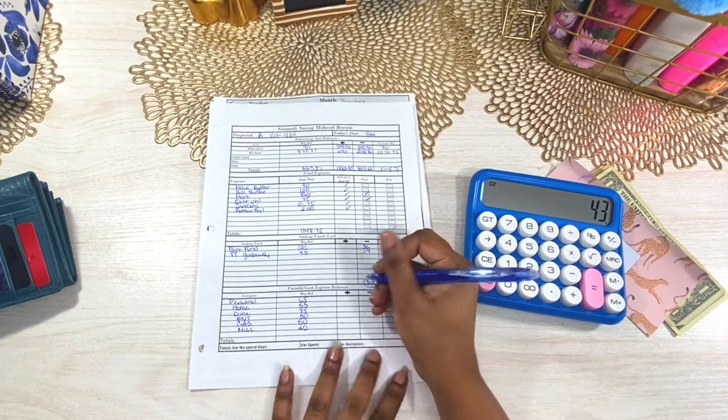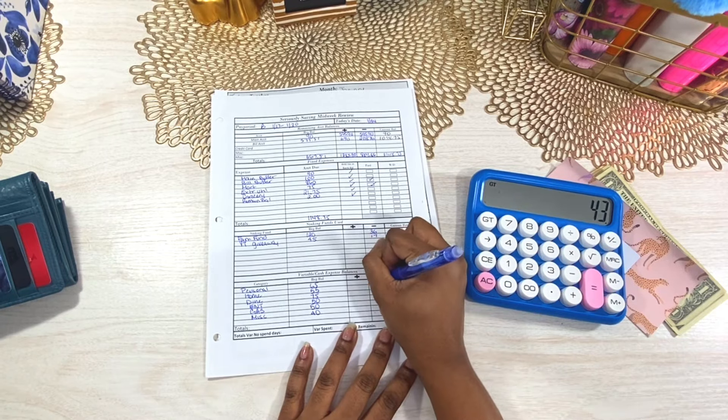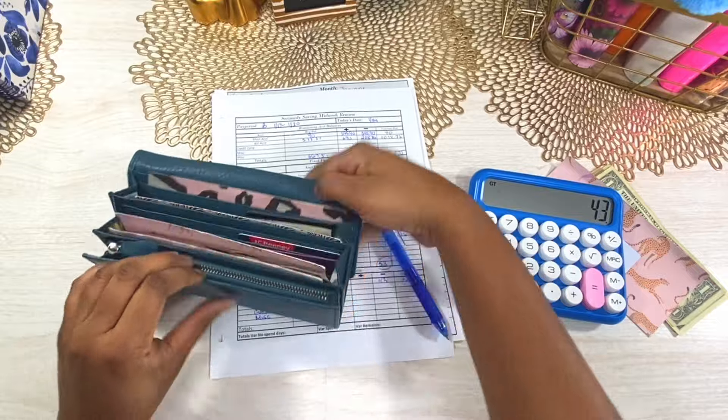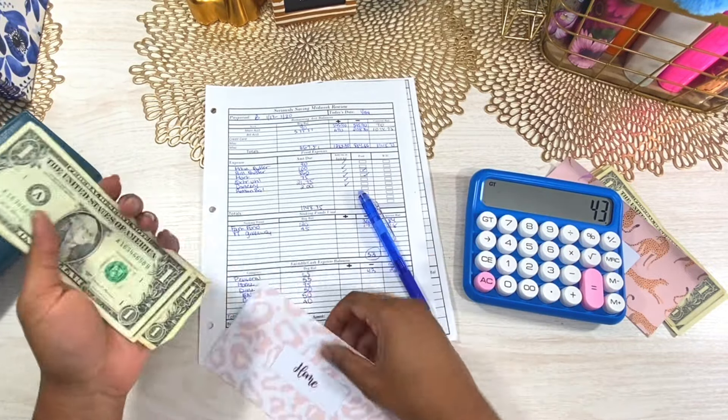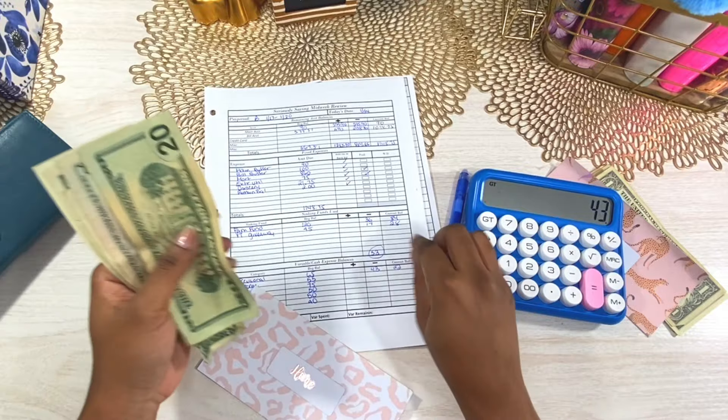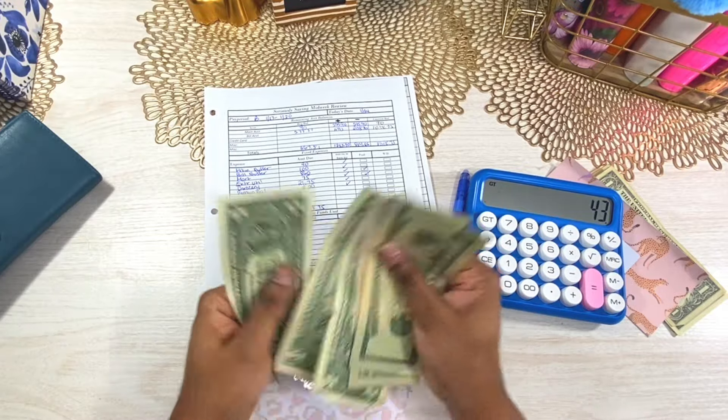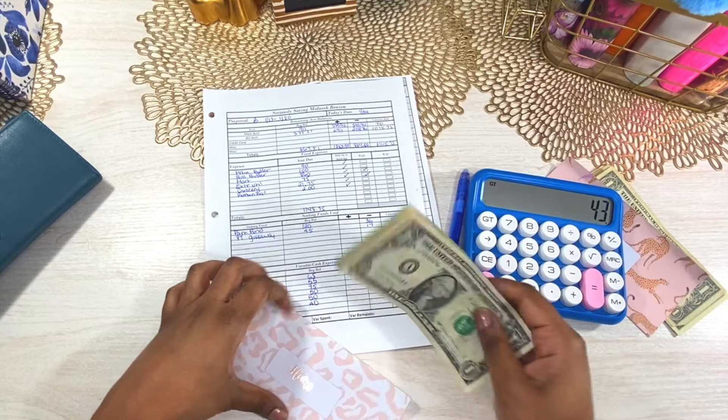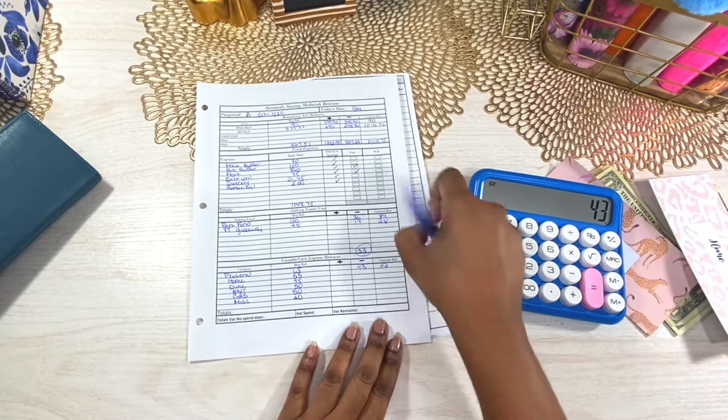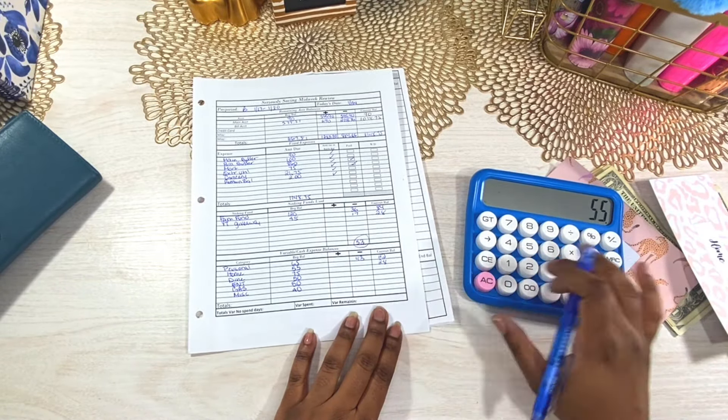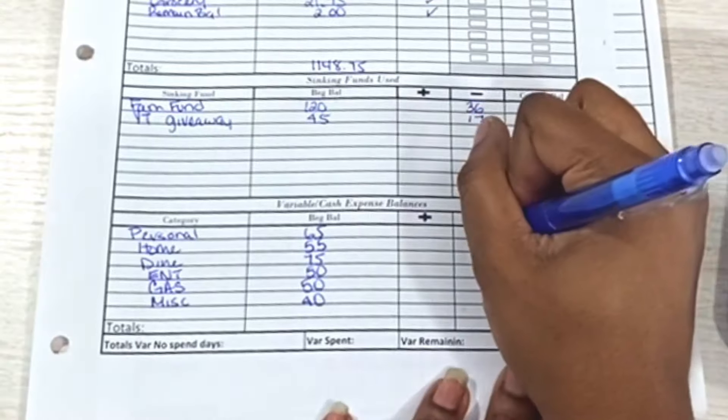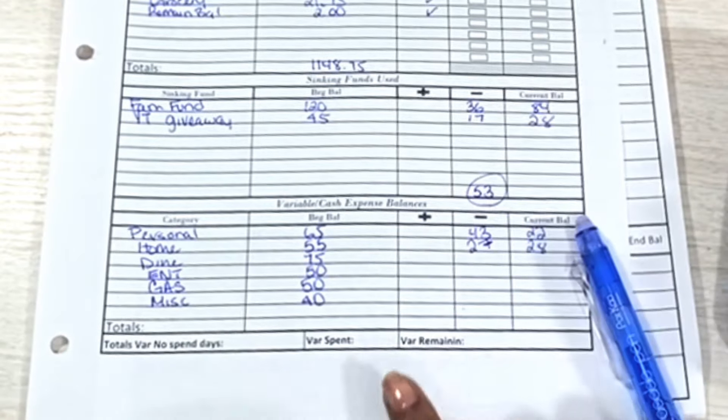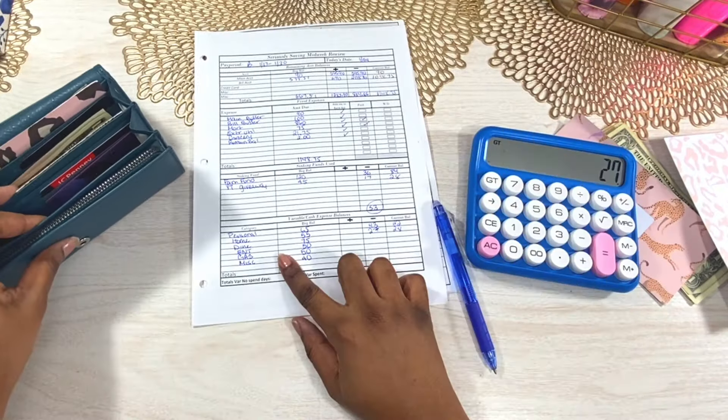And we spent $43. Home started with $55. Home has $28 left. That means we spent $27 from home. Not bad. Okay, dining out already know that has nothing.